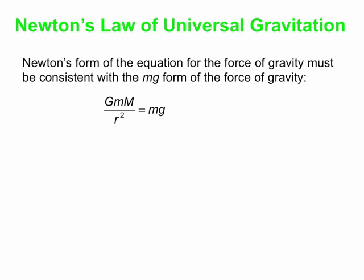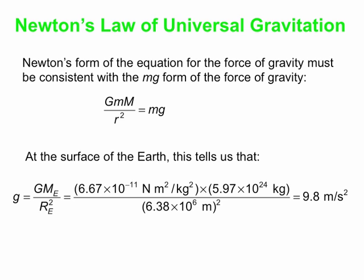One thing you notice is that little m cancels out. Little m could be the mass of you if you're interacting with the Earth or the mass of some phone you're carrying or whatever. So you set these equations equal to each other, little m cancels out, and what you got left is where g comes from.